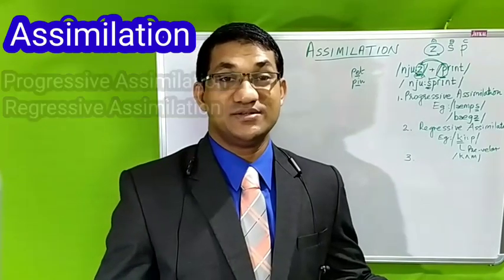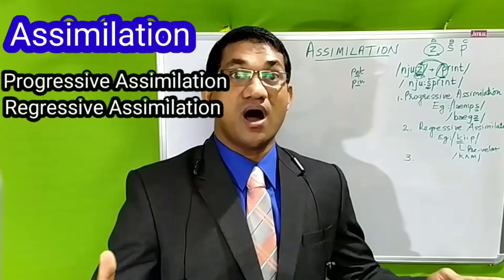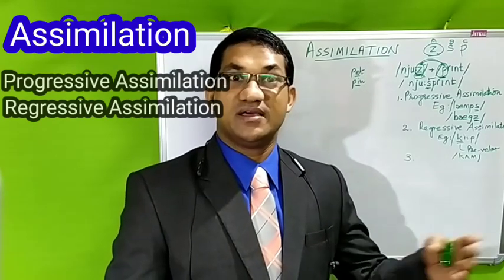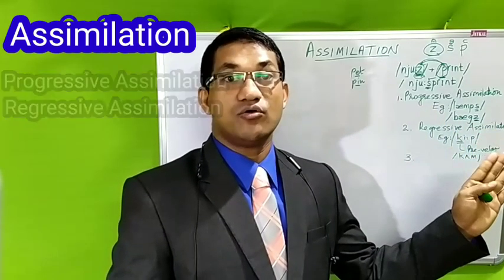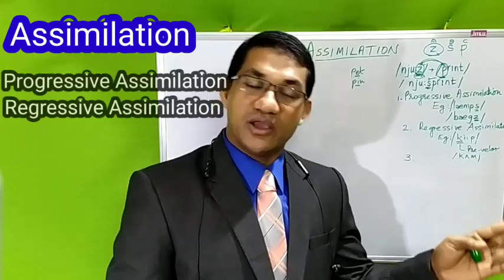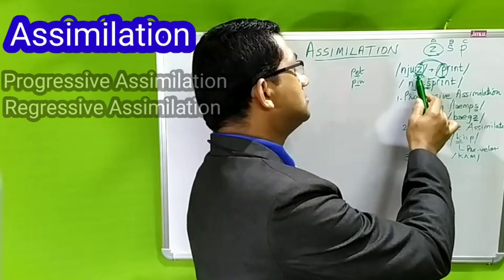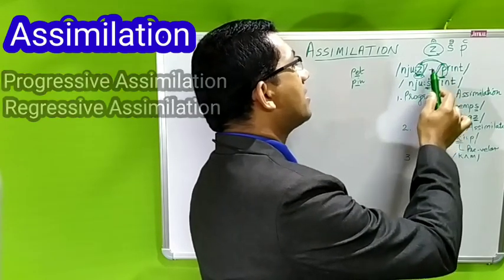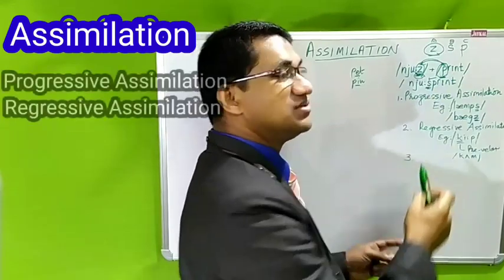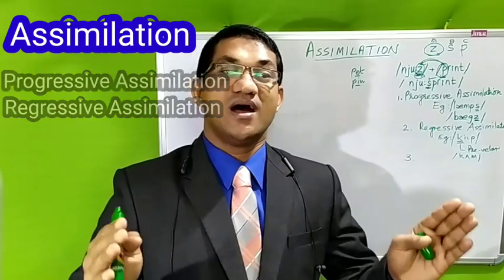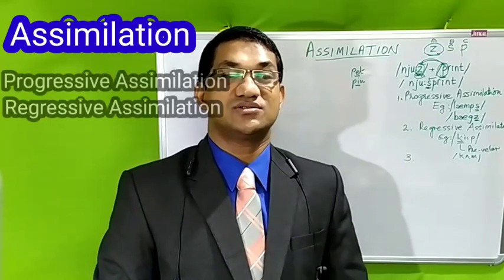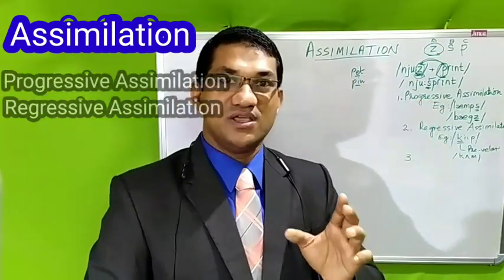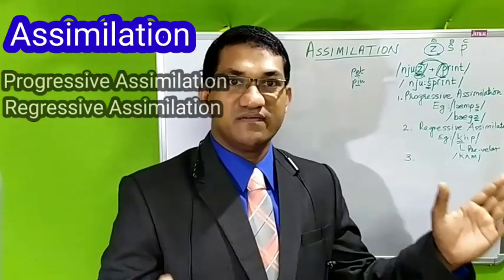We can say that sound A is replaced by sound B under the influence of sound C. Assimilation refers to the change of one phoneme by another phoneme under the influence of a third phoneme. In 'newsprint,' voiced /z/ is replaced by voiceless /s/ under the influence of voiceless /p/. We also understand that the change is quite often allophonic — the change is occurring on a phoneme in a particular phonetic environment.